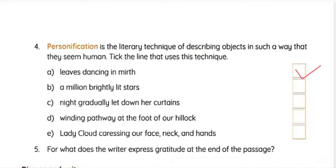'A million brightly lit stars' — here we cannot see any personification. But 'night gradually let down her curtains' — yes, this is personification. The writer has given life to the night. Notice the word 'her' — H-E-R. The night doesn't have life, but the writer has given it life by saying it lets down 'her' curtains.